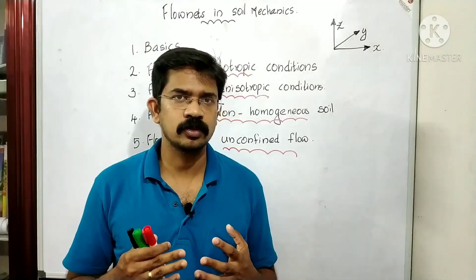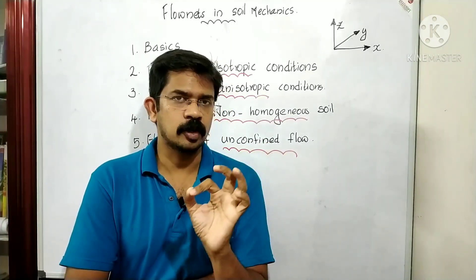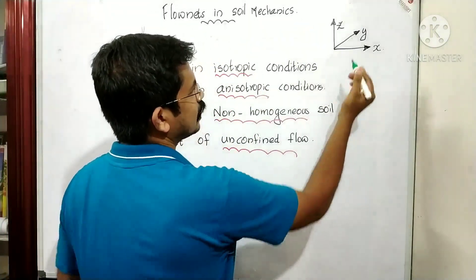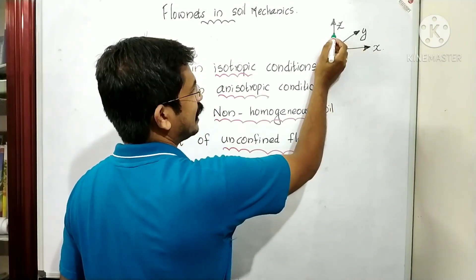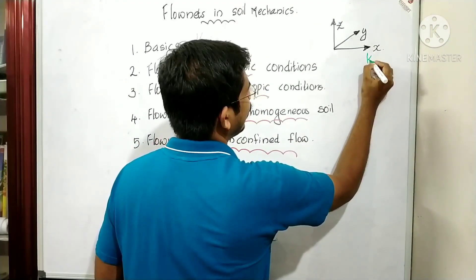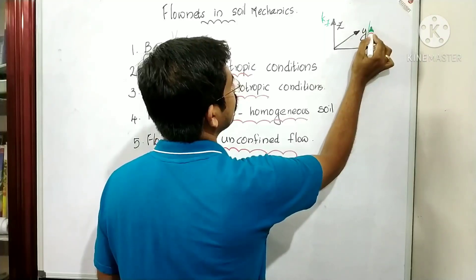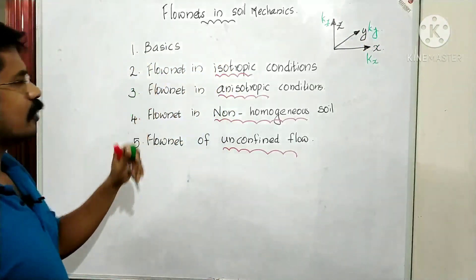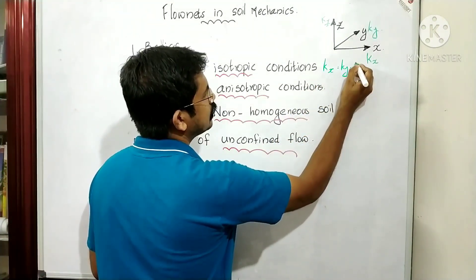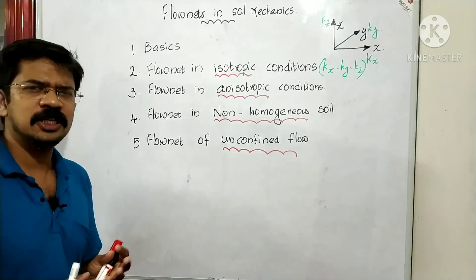Here we are considering flow of water through the soil, so we are taking only the property named permeability. Let us take global axes: X in this direction, Y in this direction, and Z in this direction. The coefficient of permeability in X direction is K_X, in Z direction is K_Z, and in Y direction is K_Y. Flow nets in isotropic condition means K_X equals K_Y equals K_Z.